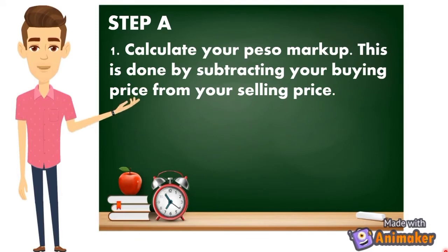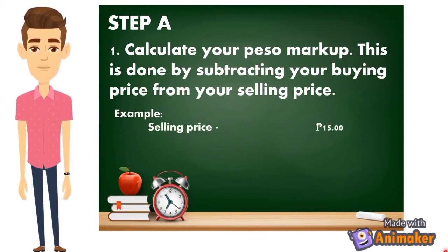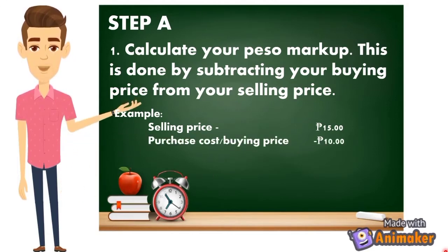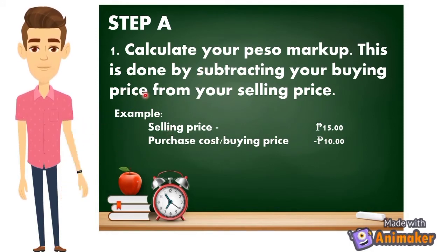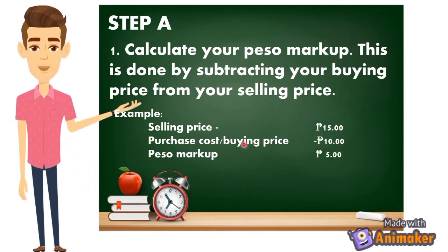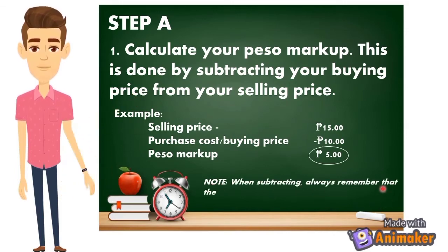This is done by subtracting your buying price from your selling price. For example, if you have a selling price of 15 pesos and a purchase cost or buying price of 10 pesos, all you have to do is subtract the buying price from the selling price. So 15 minus 10 equals 5 pesos, which is your peso markup.